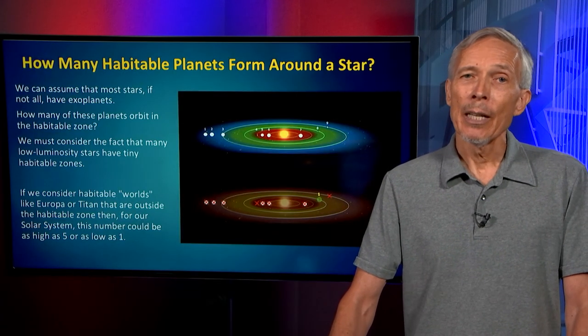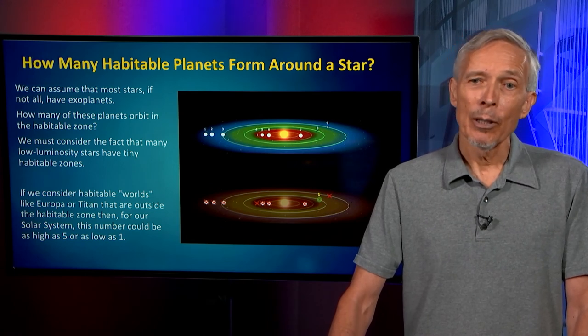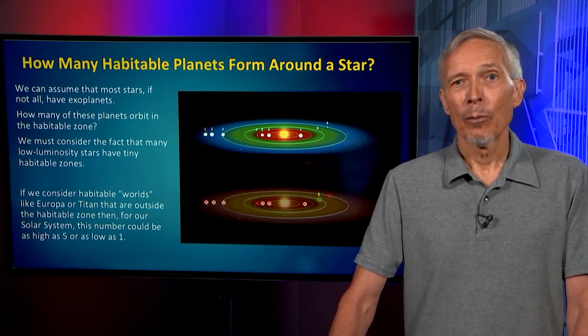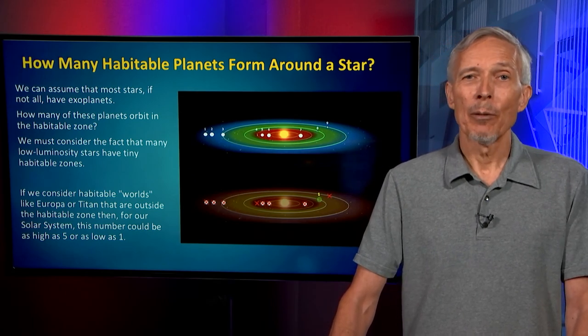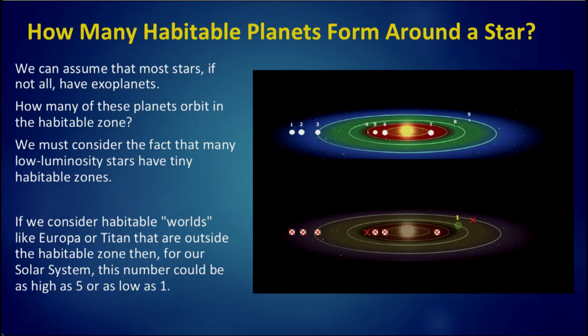The best guess at the moment is that there's going to be a couple of habitable planets per star, because that's the situation in the solar system, and we're trying to project that into the Milky Way, but for now the numbers are very uncertain.